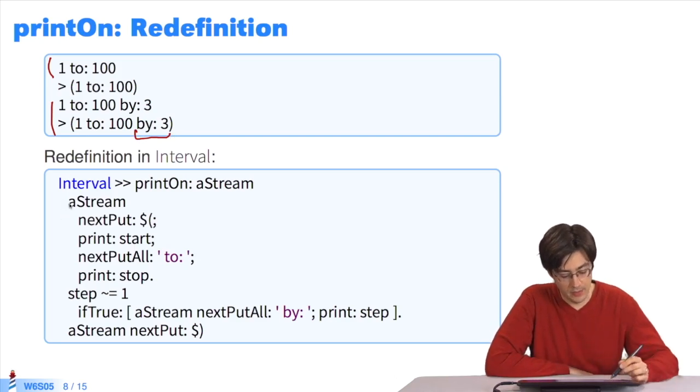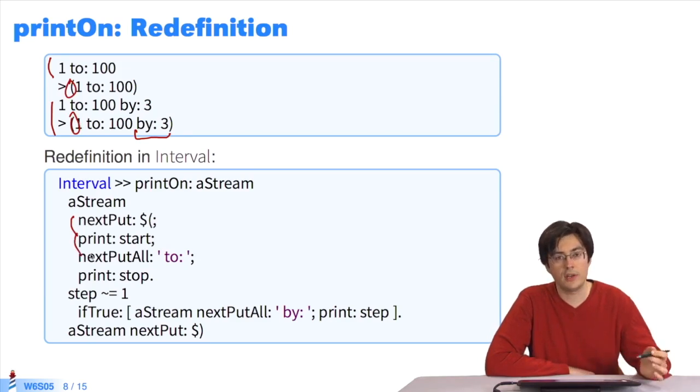How is this implemented? The interval class redefines the printOn method and sends different messages to stream variables. We start by opening parentheses. Then we display the initial value of the first number of the interval.